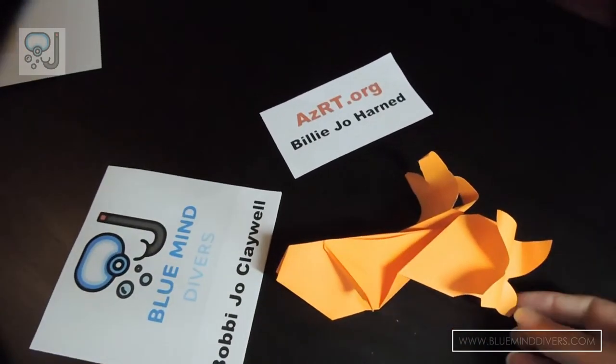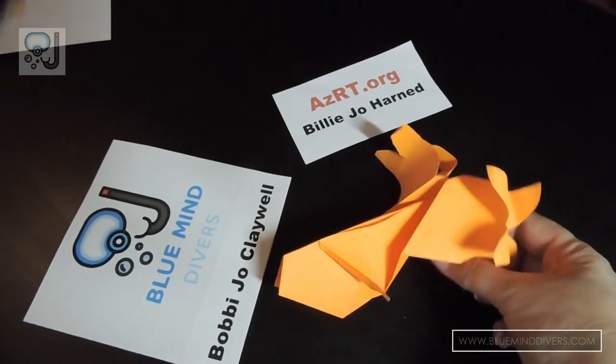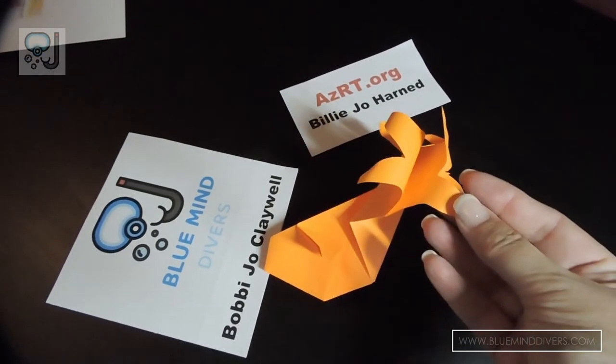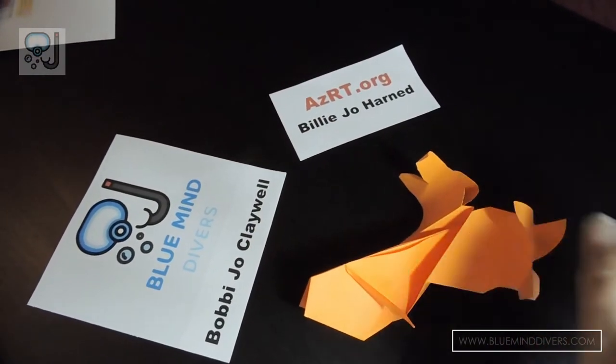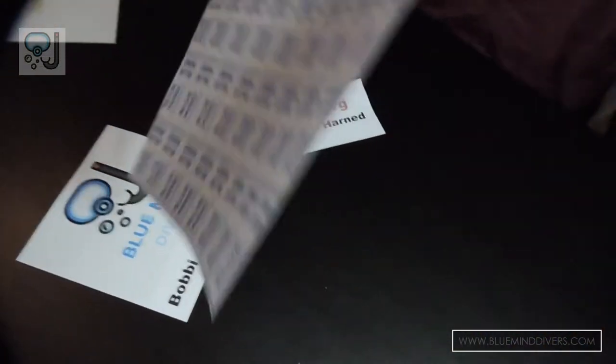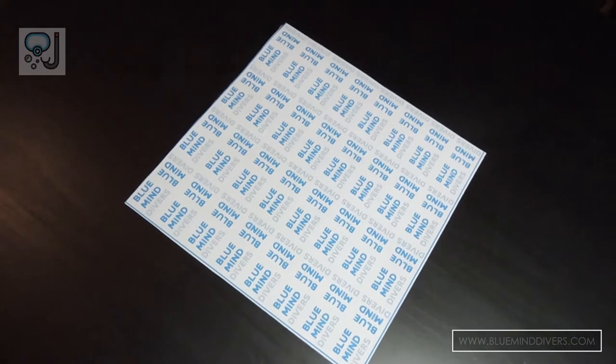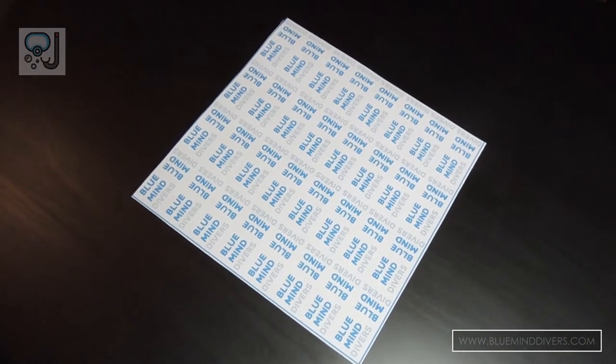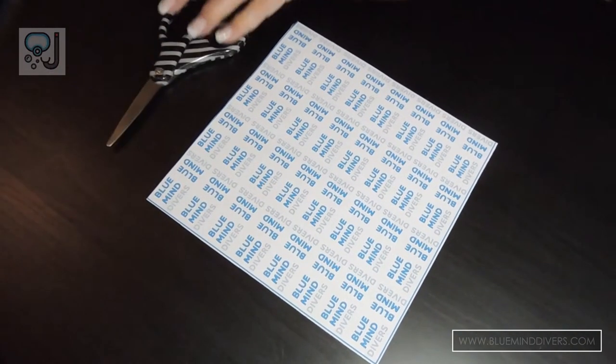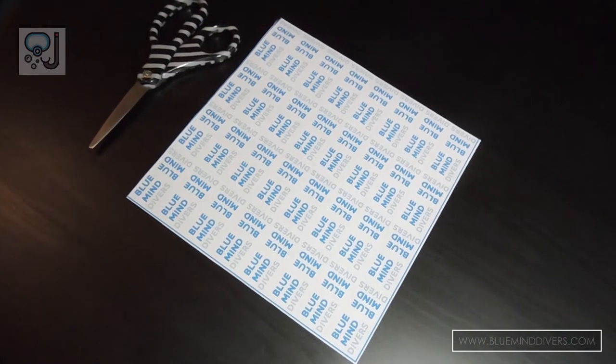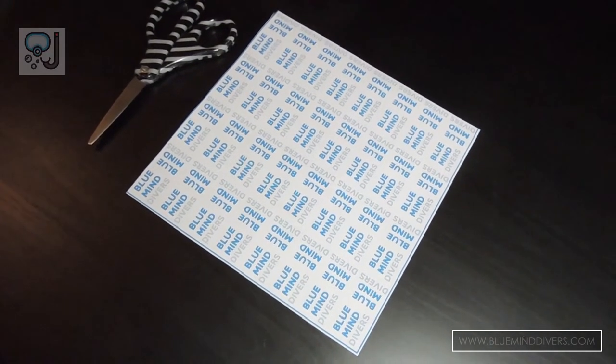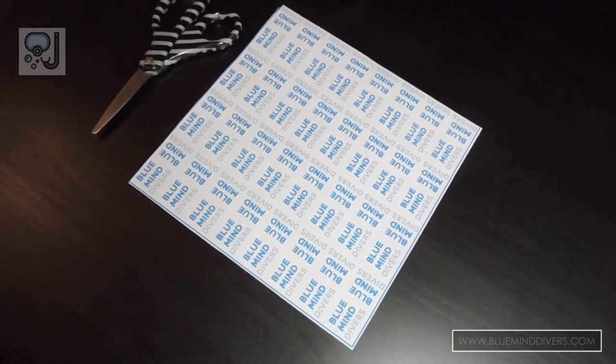We're going to make him in the traditional way, and then at the end we are also going to make him a fancy tail, as you see on the one we have here. The supplies that you're going to need today are a piece of perfectly square paper. You can use paper from our Facebook page at Blue Mine Divers where we have uploaded the paper, or you can design your own or use any piece of square paper that you would like.